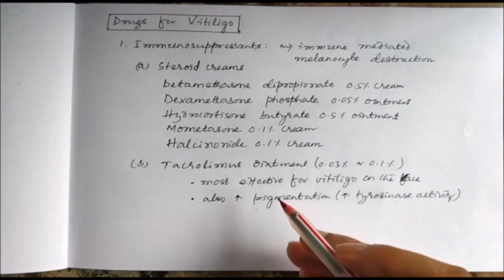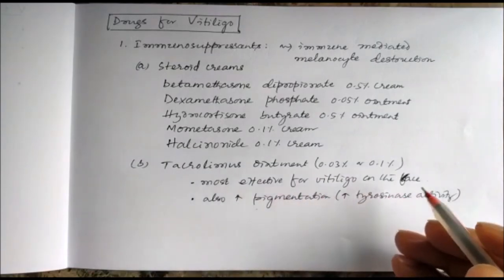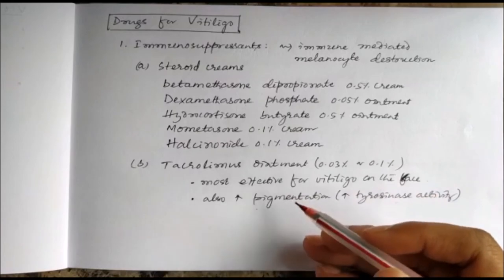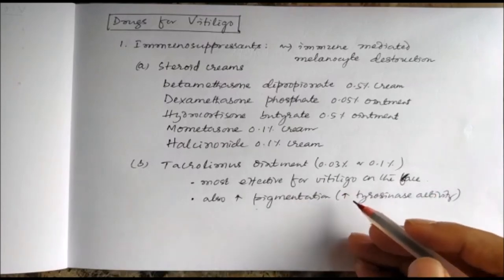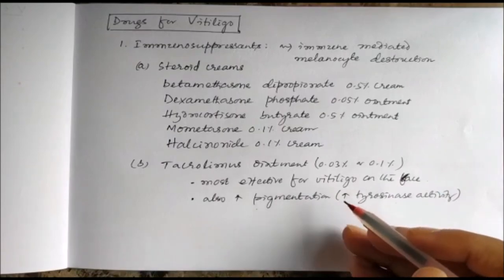Tacrolimus is most effective for vitiligo on the face. In addition to its immunosuppressant action, it also increases the tyrosinase activity, so it can increase pigmentation.